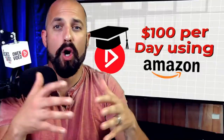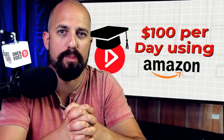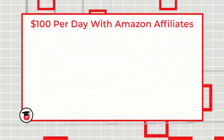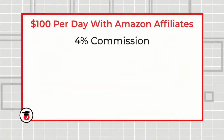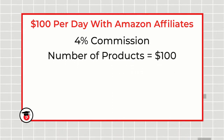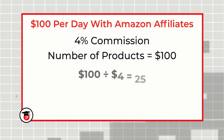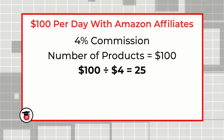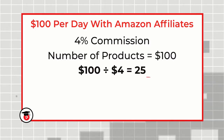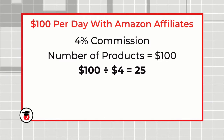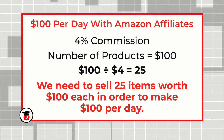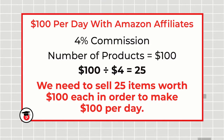That's pretty good. So how do you make $100 per day? It comes down to that blueprint equation. At 4% commission, you need to figure out how many products you need to sell in order to equal $100 per day. What we do is take $100 and divide it by $4, which gives us 25 — meaning we've got to sell 25 $100 items at 4% commission in order to make $100 per day on Amazon.